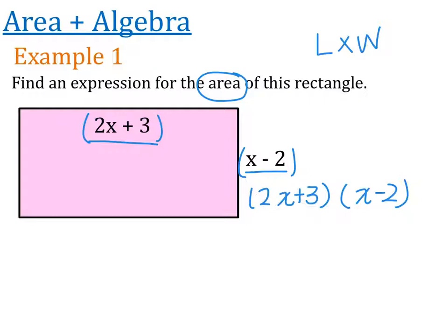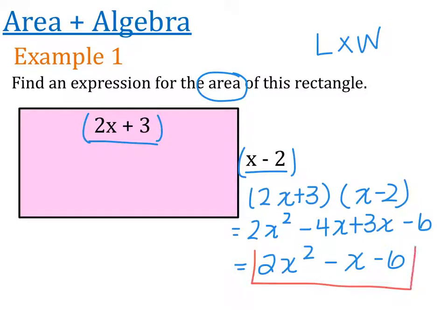So hopefully you feel really comfortable with this and we can have 2x squared minus 4x plus 3x minus 6, which simplifies down to 2x squared minus x minus 6. And that's it, the entire question is done. The expression for the area of this particular rectangle is 2x squared minus x minus 6.